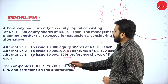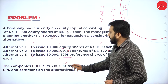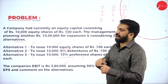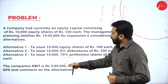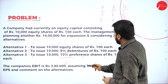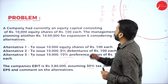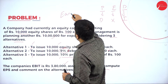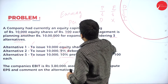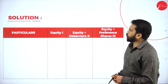The company's EBIT — Earning Before Interest and Tax — is 3,80,000. If you invest this additional 10,000,000, your earning will be 3,80,000 every year. Assuming 30% tax, compute EPS — EPS stands for Earning Per Share.